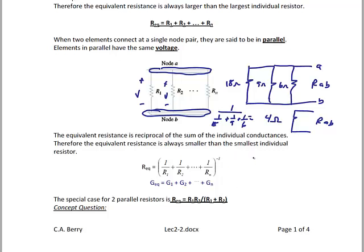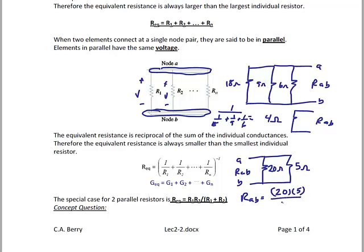Let's do an example using the product over the sum. Say I have a 20 ohm resistor in parallel with a 5 ohm resistor, and I want to know the equivalent resistance. RAB equals 20 times 5 over 20 plus 5, which is also 4 ohms.